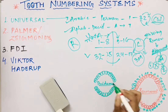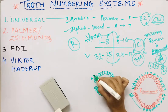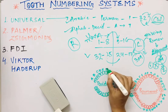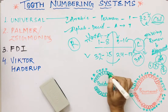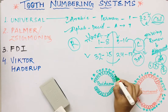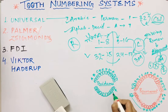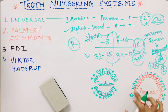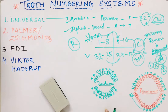In deciduous dentition, the Universal system uses letters A through T, also moving clockwise. Starting from the upper right: A, B, C (canine), D, E; then upper left: F (maxillary left central incisor), G, H, I, J; lower left: K, L, M, N, O; and lower right: P, Q, R, S, T. So permanent dentition is numbered 1 to 32 and deciduous dentition A to T, both moving clockwise.